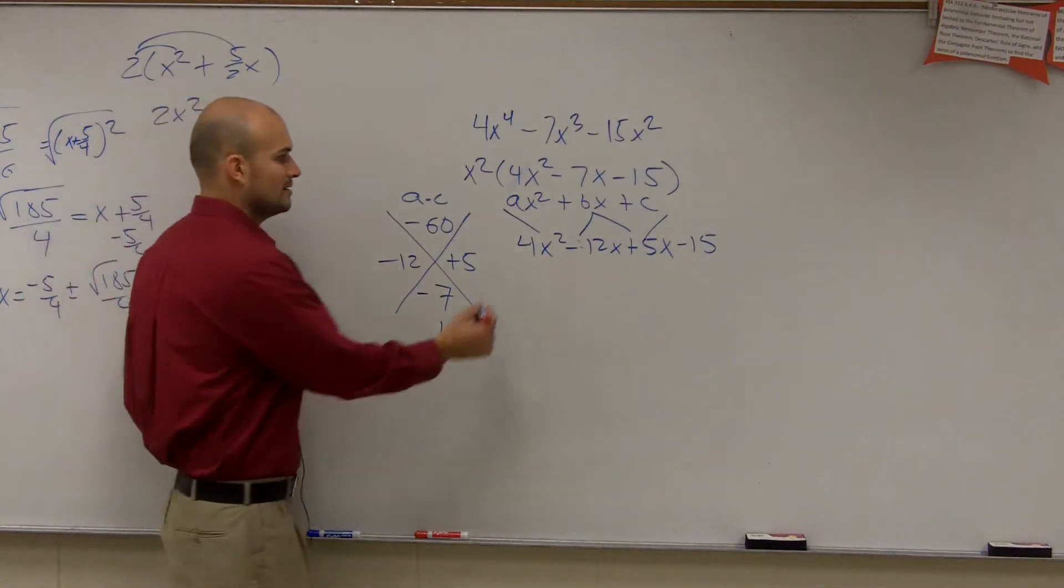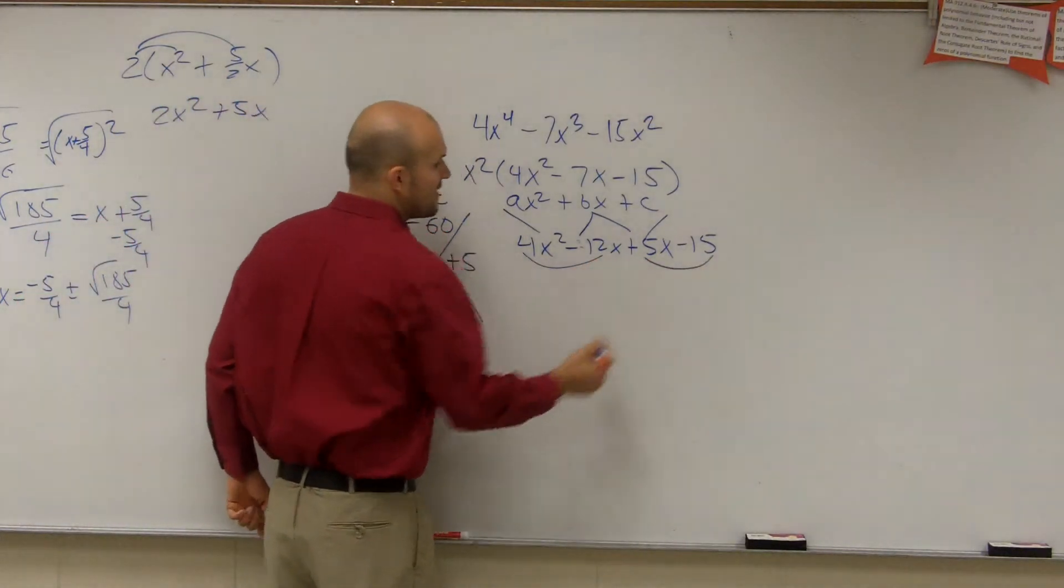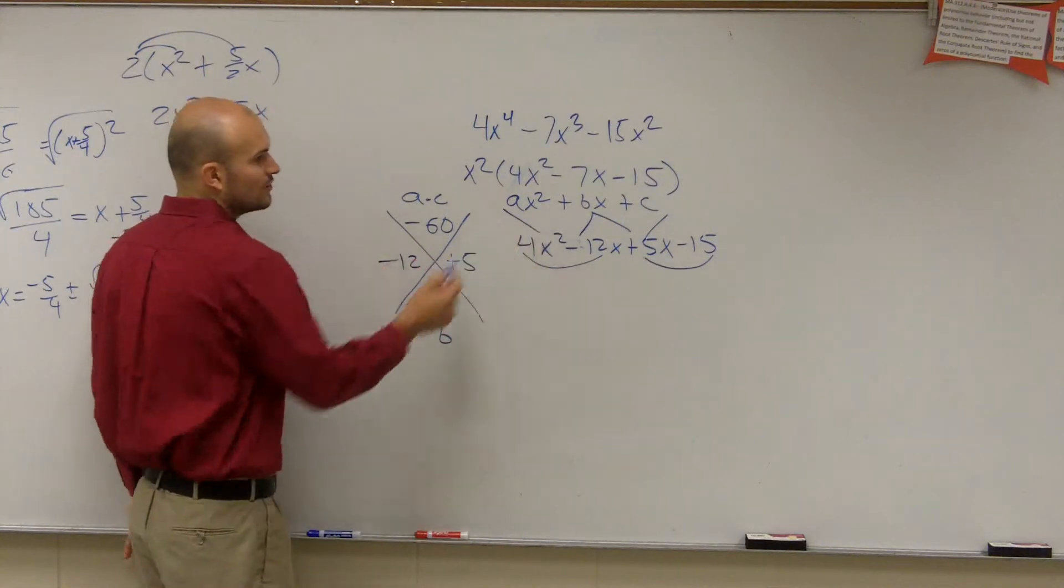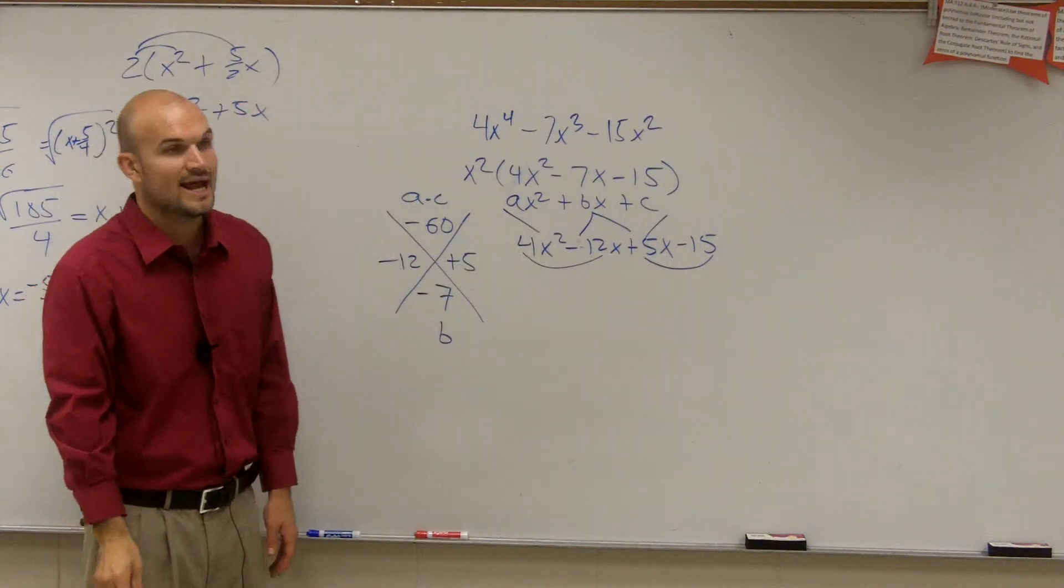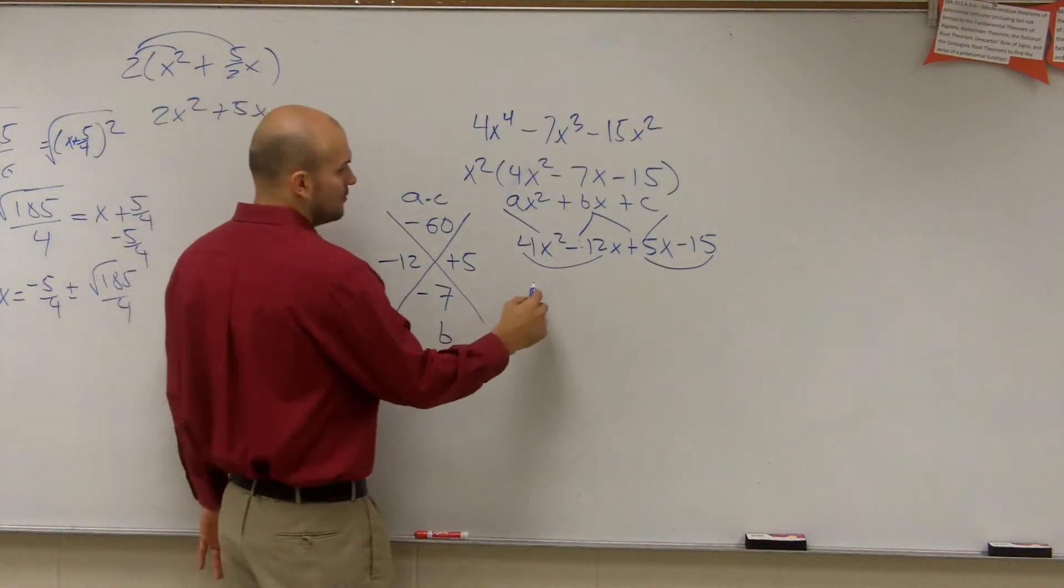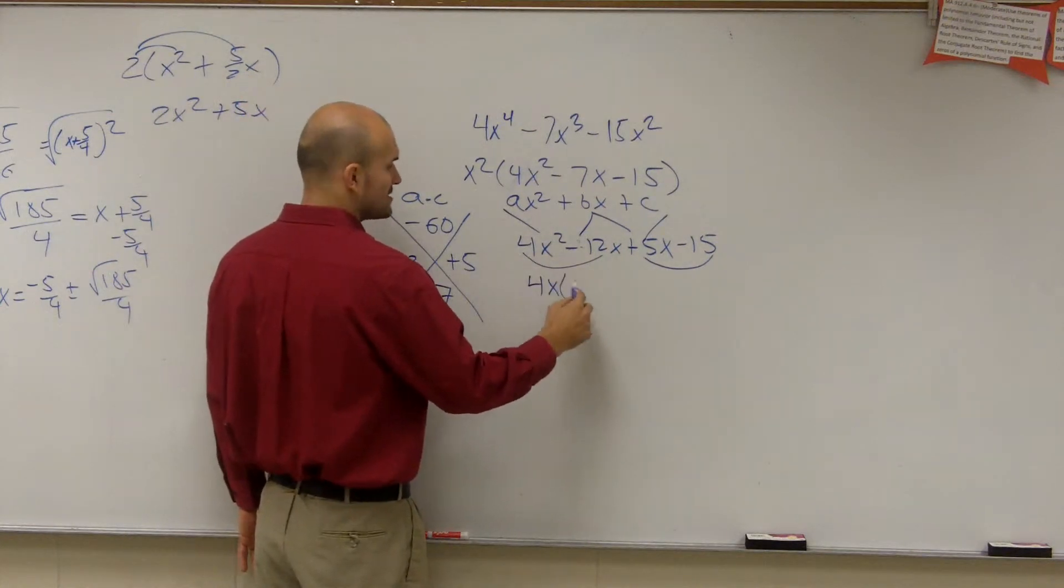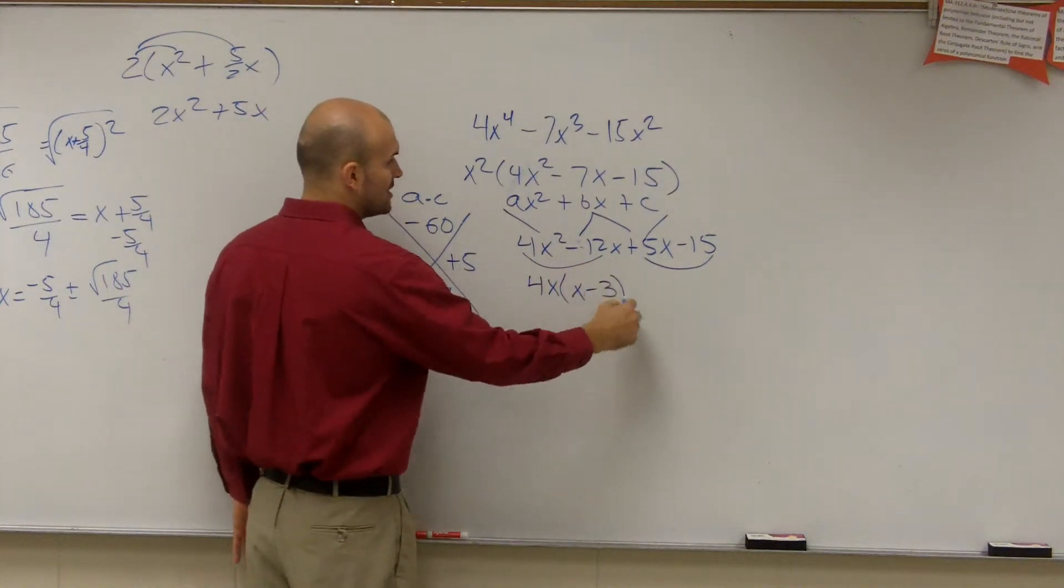Now, I factor by grouping. Factor out the first two terms, factor out my last two terms. So what do 4x squared and negative 12x have in common? Well, we can factor out a positive 4x, which will leave me with x minus 3.